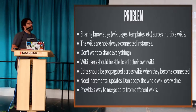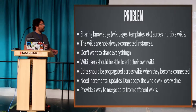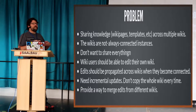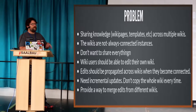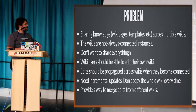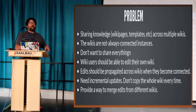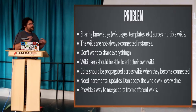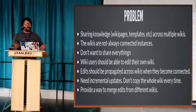What problem am I trying to solve here? We want to share knowledge — wiki pages, templates, etc. — across multiple wikis. We want to do this even when the wikis are not always connected to the internet, and maybe not always in communication with each other. Usually we don't want to share everything, just one namespace or set of pages. We don't want to interrupt regular use of the wiki. We want people to be able to edit their own wiki, but still have those edits propagated across to other wikis when they become connected. We need incremental updates — we don't want to copy the whole wiki every time — and we need a way to merge edits from different wikis.